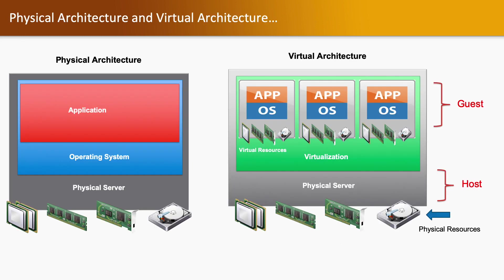We will talk about the physical architecture and virtual architecture. In a physical architecture we have the physical server running on the bottom. On top of each physical server we have a single operating system running, and on that operating system applications are running. Physical servers have four resources which include CPU, Memory, Network Card, and Hard Drives.